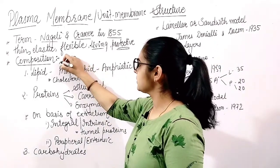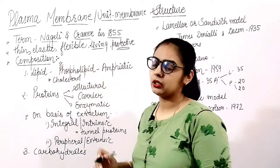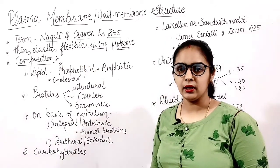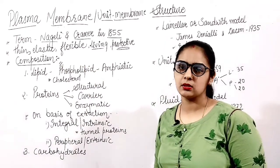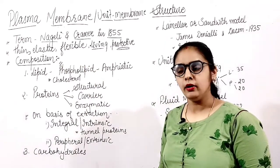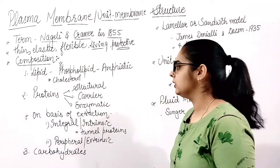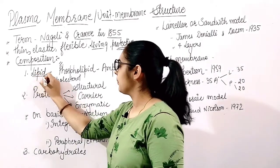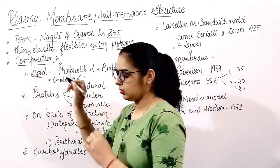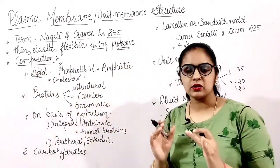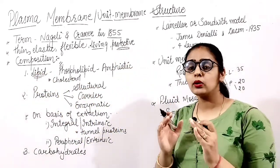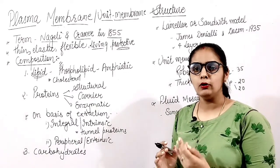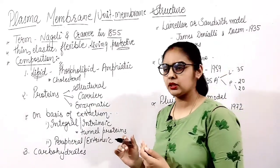Now let's talk about the composition of the plasma membrane. First, lipids. The plasma membrane is made up of lipids, and because of the lipids, the plasma membrane has a fluid — semi-solid, viscous — nature.